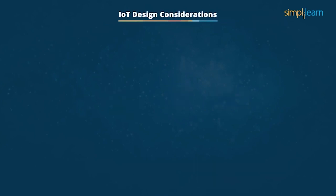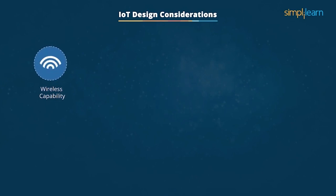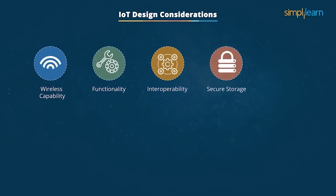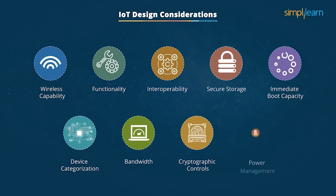When you choose an IoT solution, you need to consider several factors like its wireless capability, functionality, interoperability, secure storage, immediate boot capacity, device categorization, bandwidth, cryptographic control, and power management. The design considerations should be a mix of the estimated average of all these components and indexed to balance user requirements. You also need to set up a dispute resolution mechanism in case of failure in the long run.